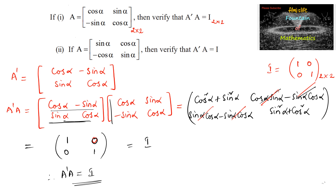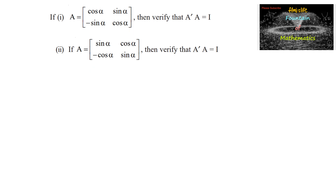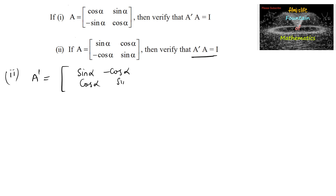Now for the second case: given A is equal to sin alpha, cos alpha, minus cos alpha and sin alpha, we need to verify again that A dash into A is equal to I. Let us find A dash, which is equal to sin alpha, minus cos alpha, and cos alpha, sin alpha — interchanging the rows and columns — which is a 2 by 2 matrix.